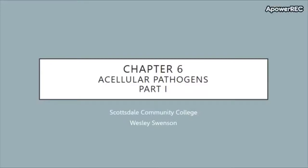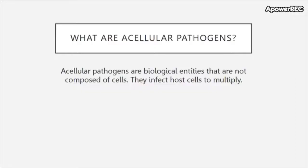Hello everyone and welcome back to microbiology. Today we'll be discussing chapter 6, acellular pathogens part 1. Acellular pathogens lack many features of a cell, especially a plasma membrane and ribosomes. For this reason they are considered acellular. Like a hostile takeover, they infect a cell and divert cellular machinery and resources into the production of more acellular pathogens.